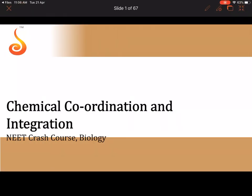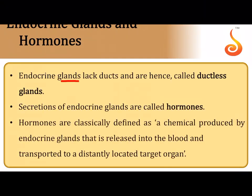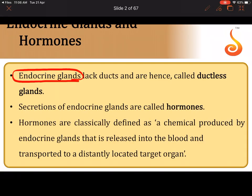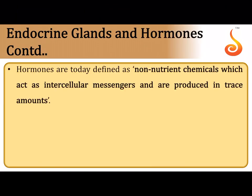Welcome to NEET crash course biology. We will be discussing the synopsis of the chapter called Chemical Coordination and Integration. In this chapter we mostly discuss endocrine glands — those glands which do not have ducts and are therefore called ductless glands. They produce secretions called chemical messengers or hormones, released directly into the bloodstream. Hormones are defined as non-nutrient chemicals which act as intercellular messengers, helping in passing messages between cells.